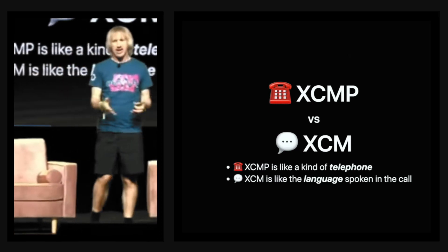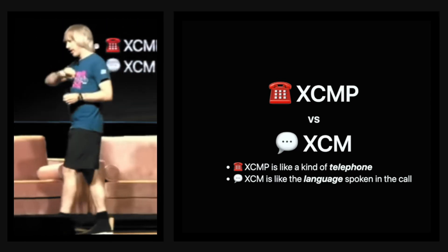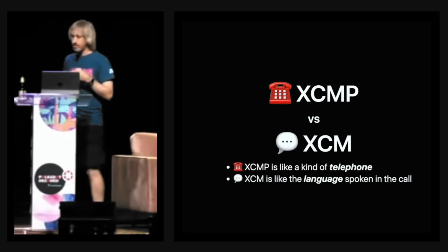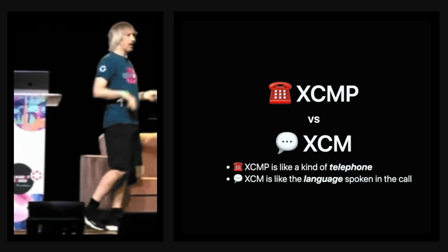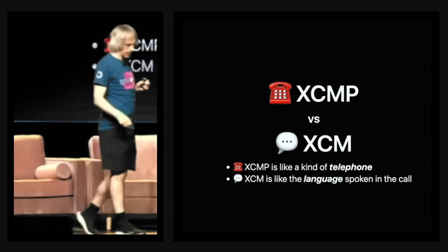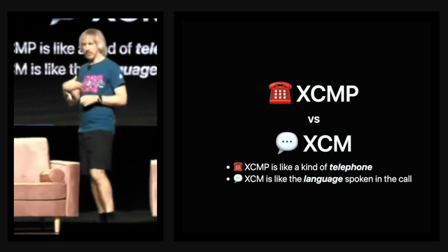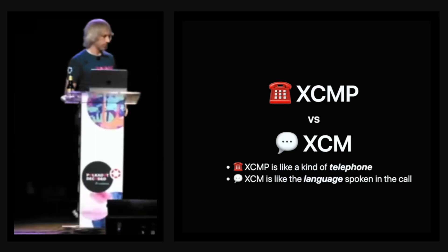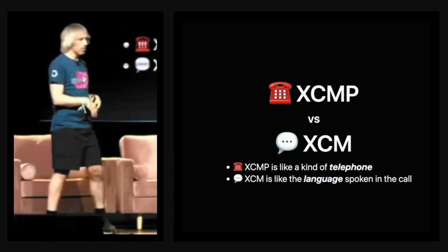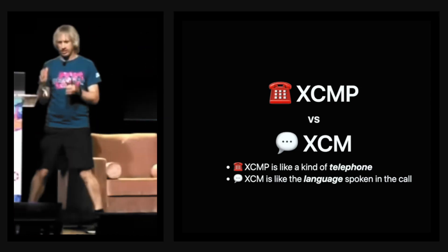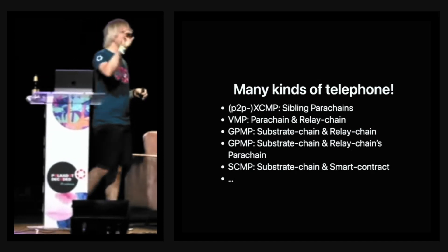How does XCM relate to XCMP? XCMP is a bit like the phone system — it's a means of getting a message from one point to another. In XCMP's case, it's a means of getting a message between sibling parachains that happen to exist under the same relay chain. XCM is a message format, it's like a language — it's like English. English is spoken on the phone system, face to face, or on a video call; it doesn't matter, it's still English.